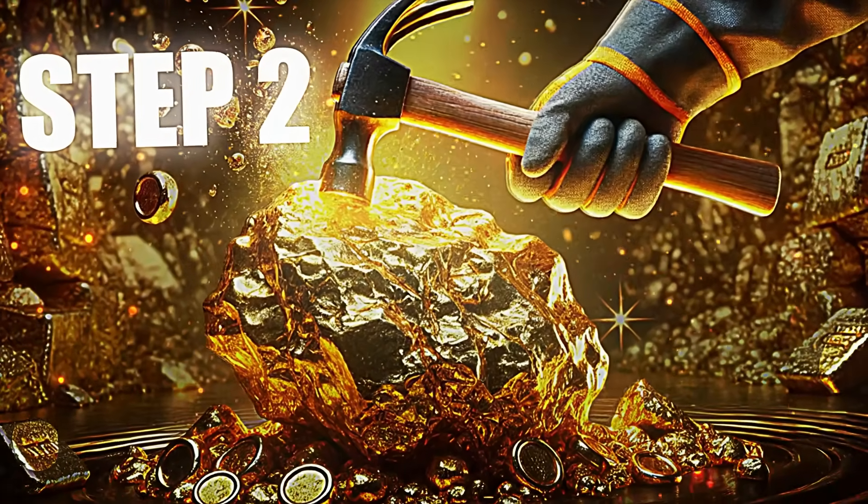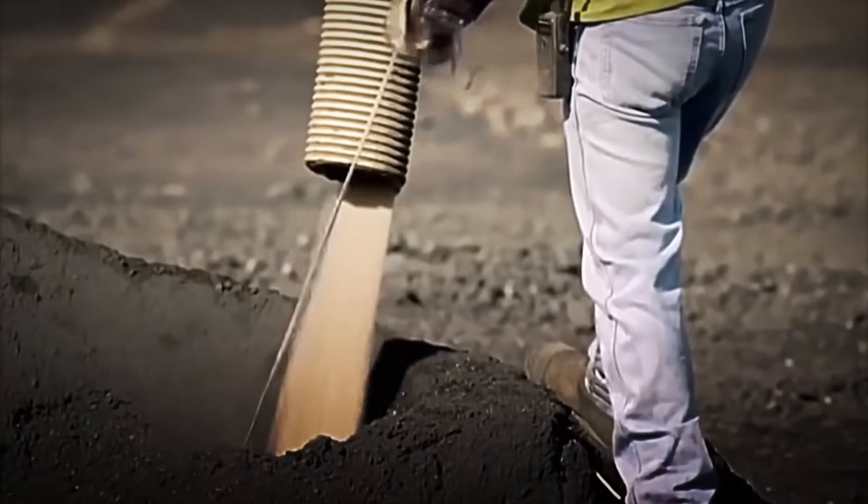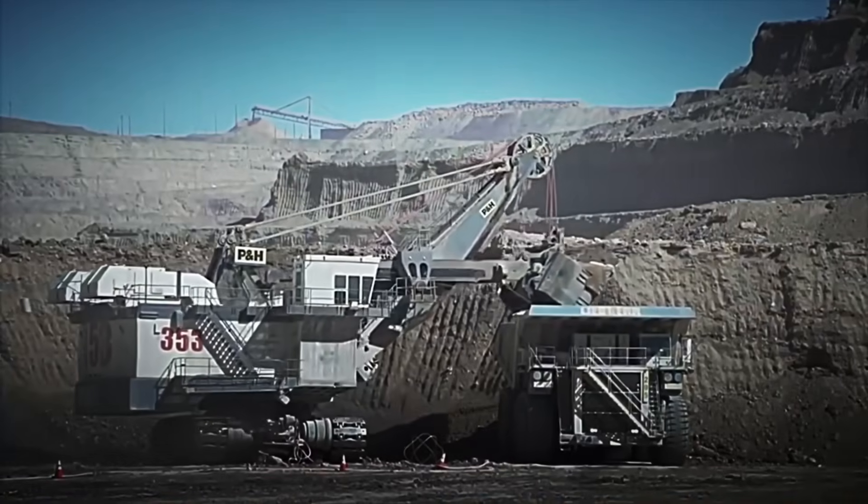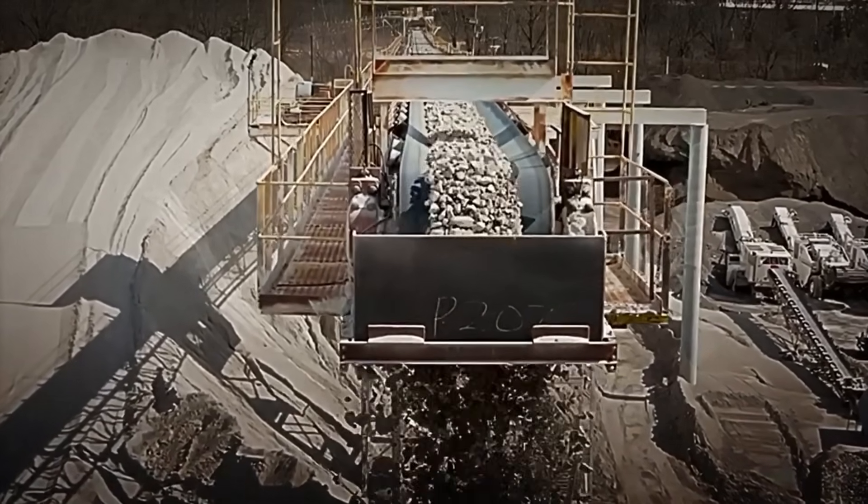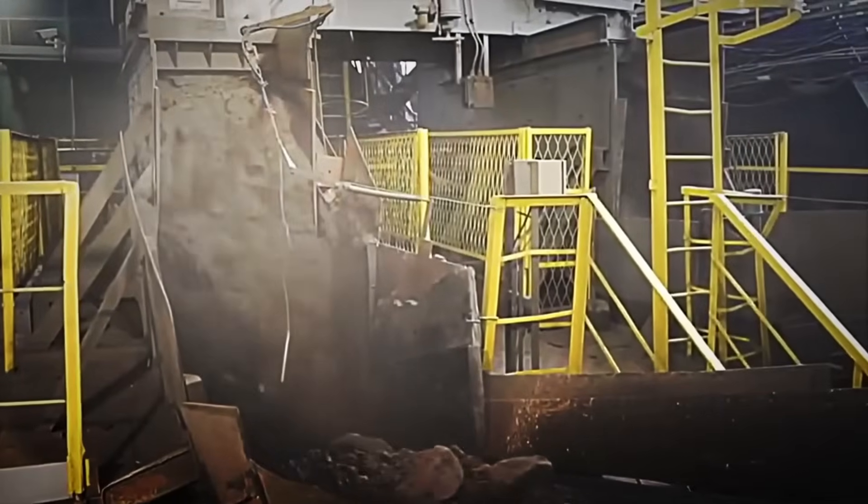Step 2: Crushing and Grinding. Once the ore arrives at the processing plant, the first crucial step begins: crushing. Enormous crushing machines break down the rocks into smaller fragments. These huge machines rotate at high speed, pulverizing the rocks until they are pebble-sized pieces.